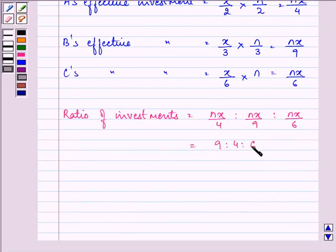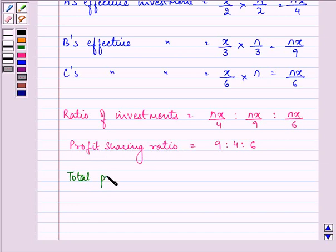That is the ratio of their investment and that will be the profit sharing ratio as well. So, we are given the total profit as rupees 1,90,000.